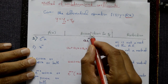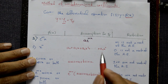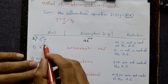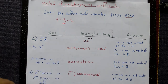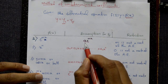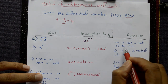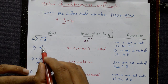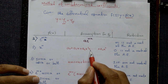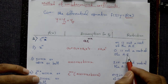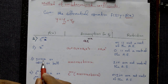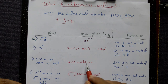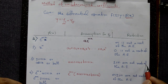See the list below for the nature of φ(x) and the assumed particular integral, along with the restriction. Case 1: if φ(x) = e^(mx), assume yp = A·e^(mx), provided m is not a root of the auxiliary equation. Case 2: if φ(x) is a polynomial of degree n, assume yp = a₀ + a₁x + a₂x² + ... + aₙxⁿ, provided 0 is not a root of the auxiliary equation. Case 3: if φ(x) = sin(nx) or cos(nx) or both, assume yp = A·cos(nx) + B·sin(nx), provided ±in are not roots of the auxiliary equation.